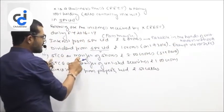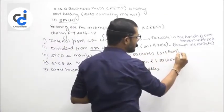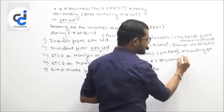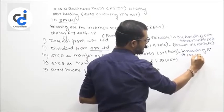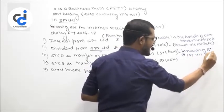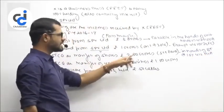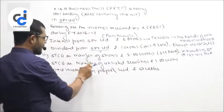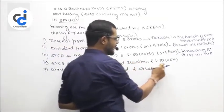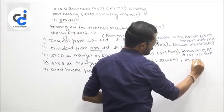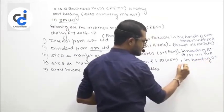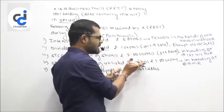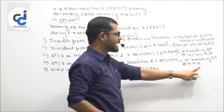Then short term capital gain on transfer of shares — STT paid — this would be chargeable in the hands of business trust at 15 percent under section 111A. Short term capital gain on transfer of unlisted securities is chargeable in the hands of the business trust at maximum marginal rate. Other income is also chargeable at maximum marginal rate.